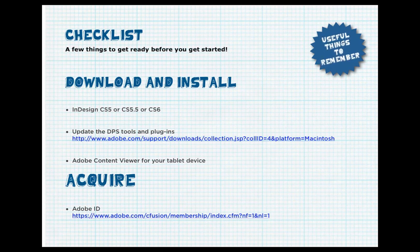So that was a brief overview of the DPS workflow. Here's a checklist of things you need before you can start designing, building, and sharing your DPS Folios. You need InDesign CS5, CS5.5, or CS6. You need to update the DPS tools and plugins — just go to the Adobe website to download the updates. If you have a tablet device, you can download the Adobe Content Viewer from your local app store. And you'll need to acquire an Adobe ID, which you can sign up for on the website completely free. Once you have those in place, you can begin designing, building, and sharing your DPS files.